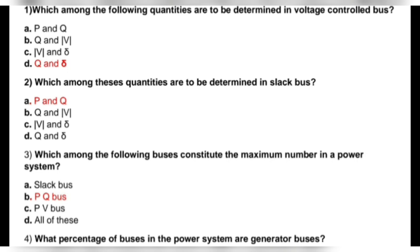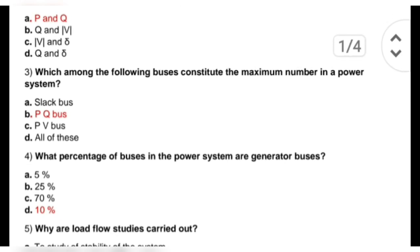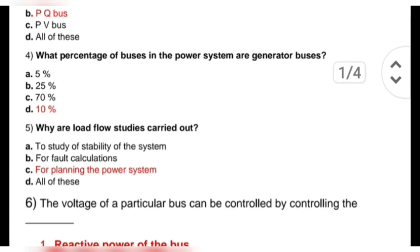Next question is: which among the following buses constitute the maximum number in a power system? Options are slack bus, PQ bus, PV bus, and all of these. The correct answer is PQ bus. Next question: what percentage of buses in the power system are generator buses? Options are 5%, 25%, 70%, and 10%. The correct answer is 10%.